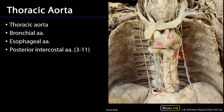The visceral branches are going to include a variety of targets. There will be bronchial arteries supplying the bronchi and parenchyma of the lung. There will be pericardial arteries supplying the pericardium with blood, and there will also be esophageal arteries supplying the esophagus with blood.